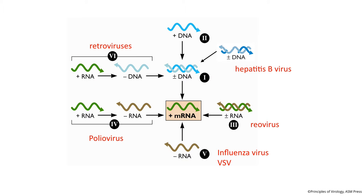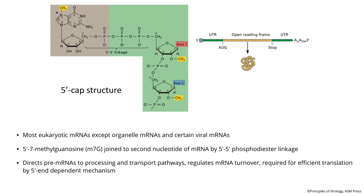Remember we classified all of our seven different genome types of viruses according to the pathway to mRNA. We put mRNA in the middle because no virus has its own translation system and it must make mRNA that can be read by host ribosomes. So today we're going to look at this process of protein synthesis. Even though viral mRNAs are translated by the eukaryotic translation apparatus, viruses can modify it in various ways.